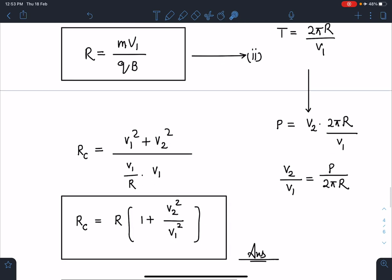When I rearrange these terms, I'll be getting R_c = R(1 + v₂²/v₁²). We can remember it something like this: v₂ is the velocity along the axis, v₁ is the velocity in the circle.